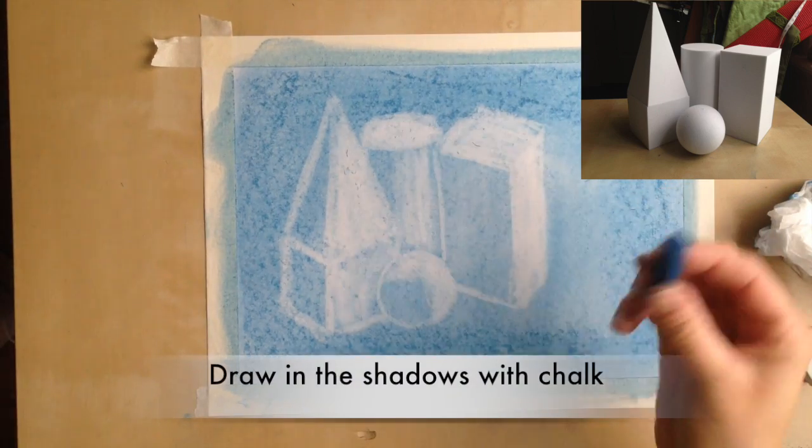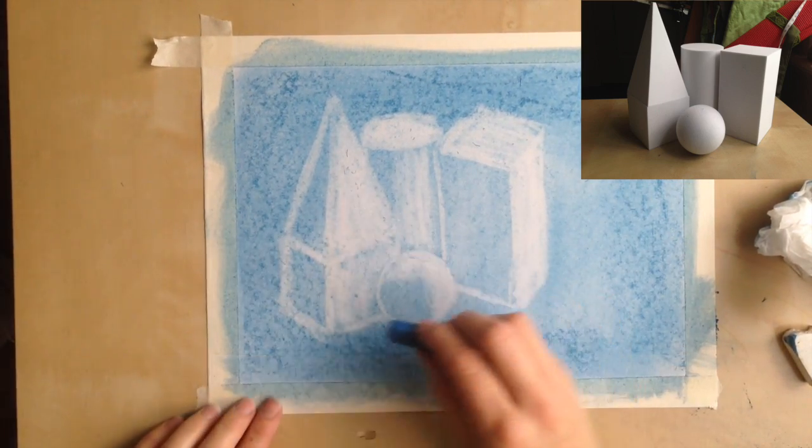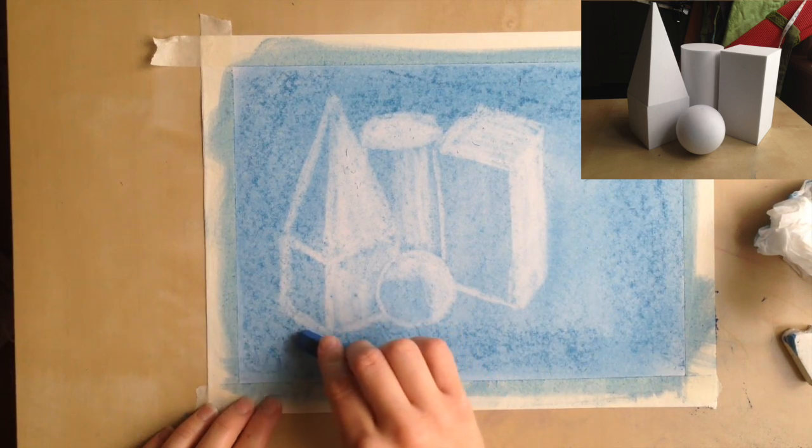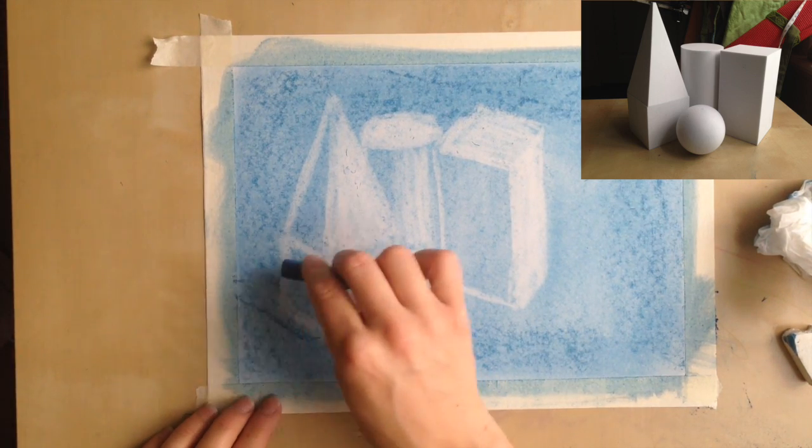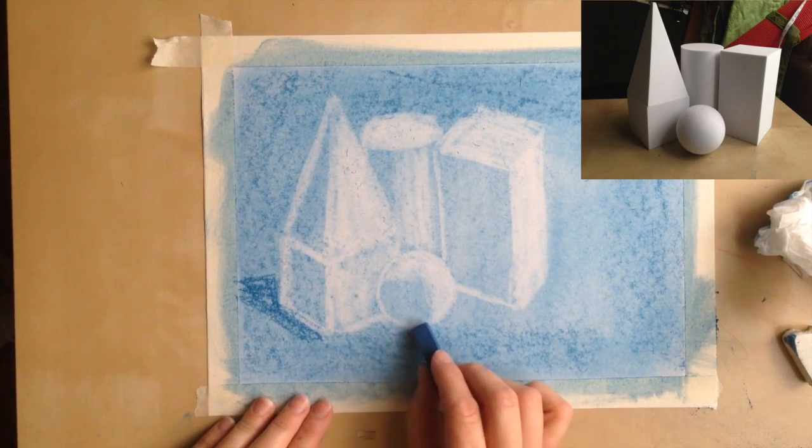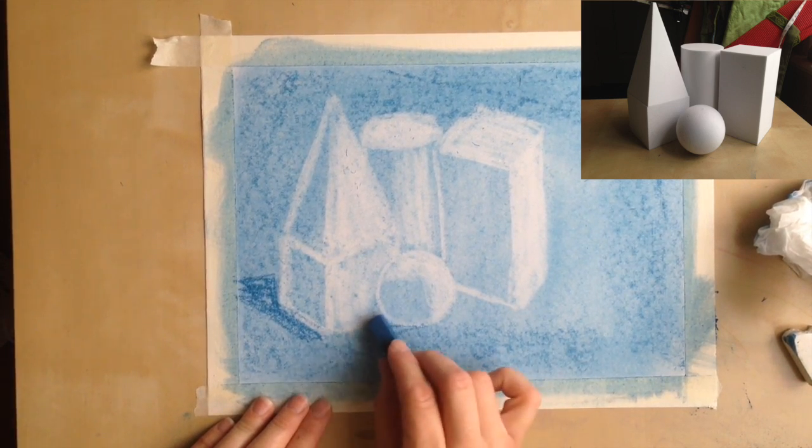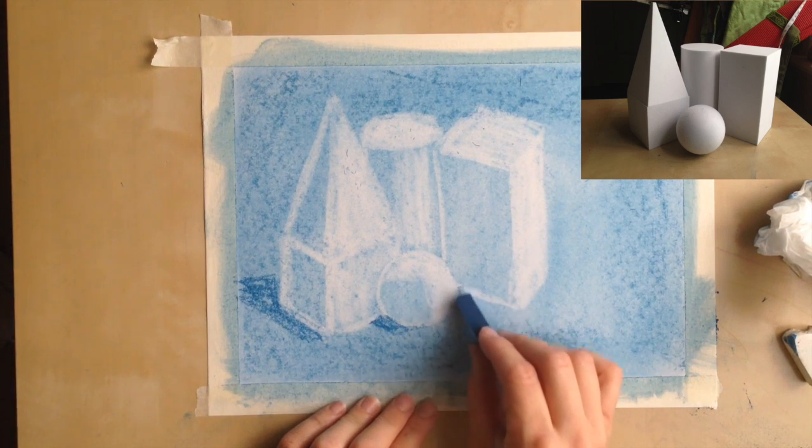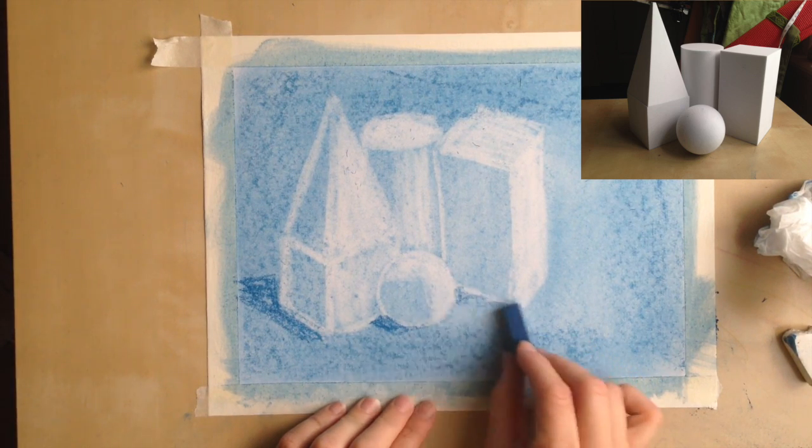Now we're going to take our chalk and we're going to put in some of our shadows. So maybe we'll just start on the left side and I can just see some shadows coming back like this. There's a shadow underneath this ball.